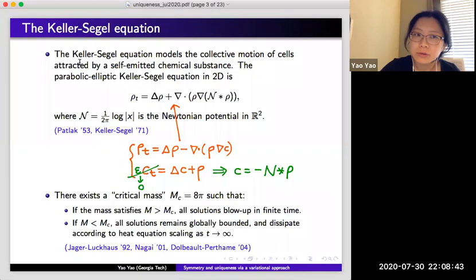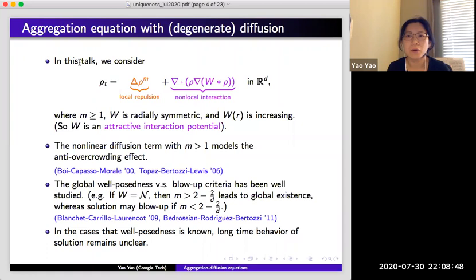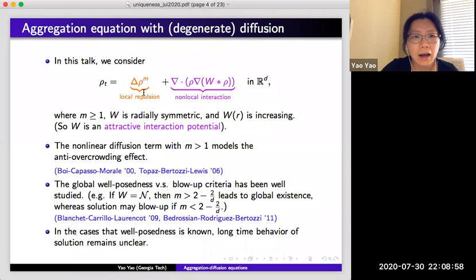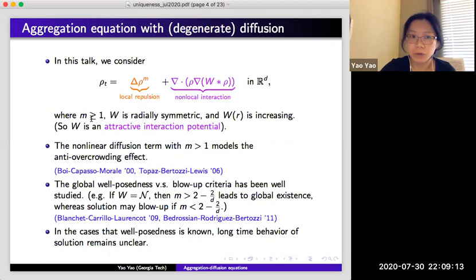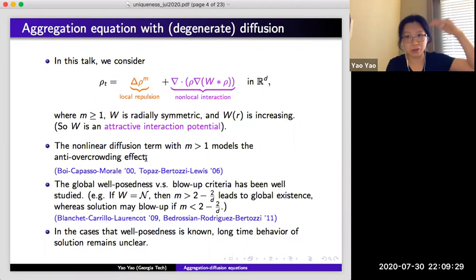Today I'm going to talk about a more general version, which still resembles the Keller-Segel equation in having two competing effects. But the first term, instead of linear diffusion, considers a nonlinear diffusion where we raise rho to the power m and then take the Laplacian. Throughout my talk I will assume m is bigger than or equal to 1. Biologically speaking, this models the anti-overcrowding effect — the bacteria have a tendency to not get too crowded. If m is bigger than 1 and the density tries to concentrate and get very high, a bigger m will have a stronger tendency to press down the density and keep it regular.